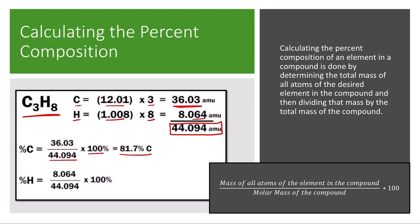If I wanted to do the same thing for hydrogen, I would similarly take the mass of all the hydrogen atoms, 8.064, divide that by the total molar mass, multiply by 100, and in this case I would get 18.3 percent hydrogen by mass.